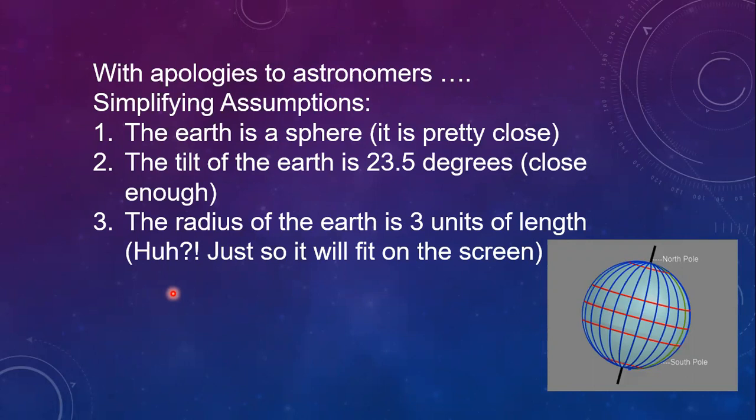I got interested in knowing what is the equation of any circle of longitude on the earth. So we had to make some assumptions. We assume that the earth is a sphere, which is pretty close. And we assume that the tilt of the earth is 23.5 degrees. In this exercise, we're going to use the radius of the earth as three units of length. That doesn't make much sense, except that it was necessary to make it fit on the screen.